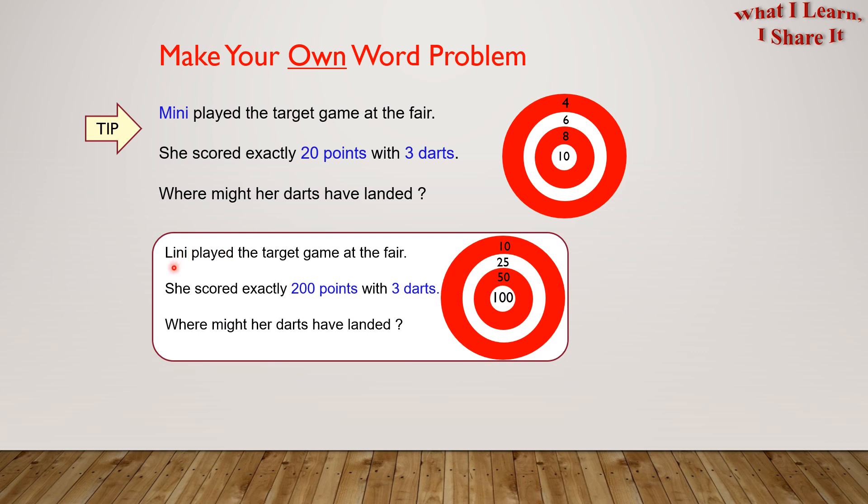Here's an example. Linny played the target game at the fair. She scored exactly 200 points with three darts. Where might her darts have landed? So easy to make your own word problems, right?